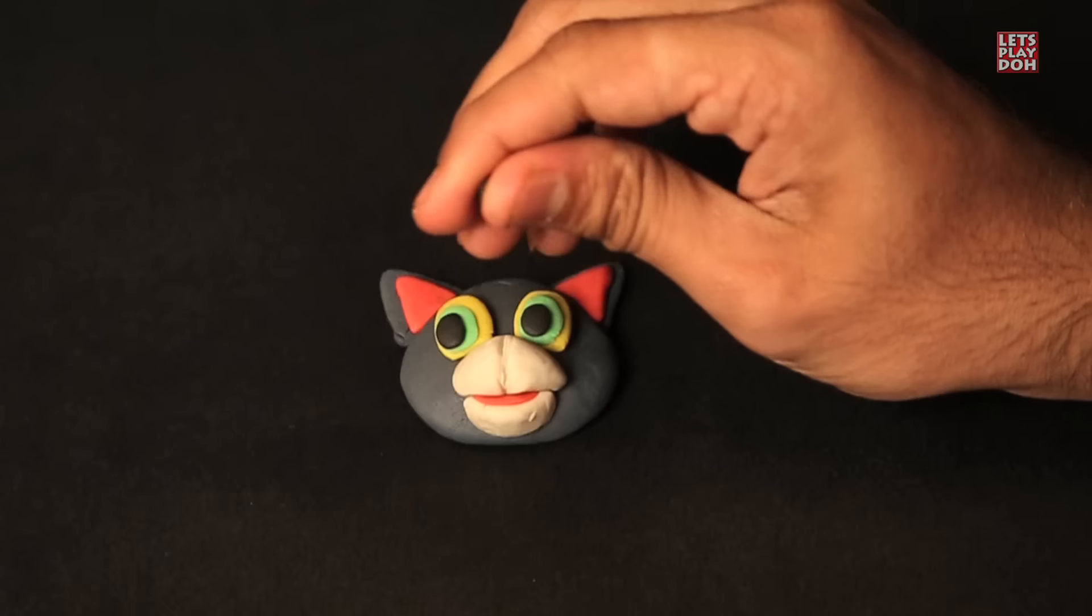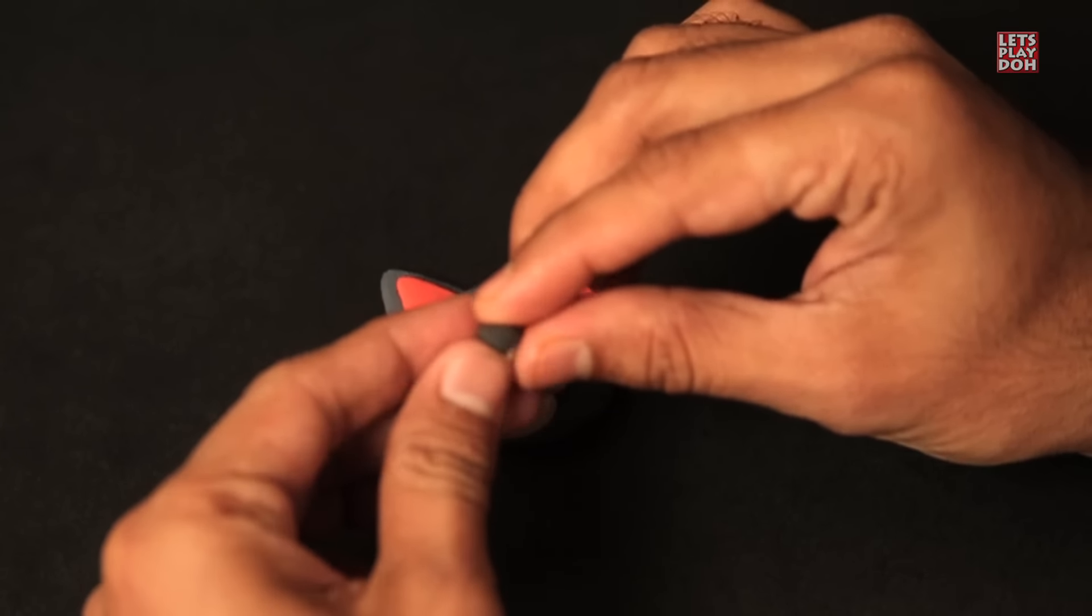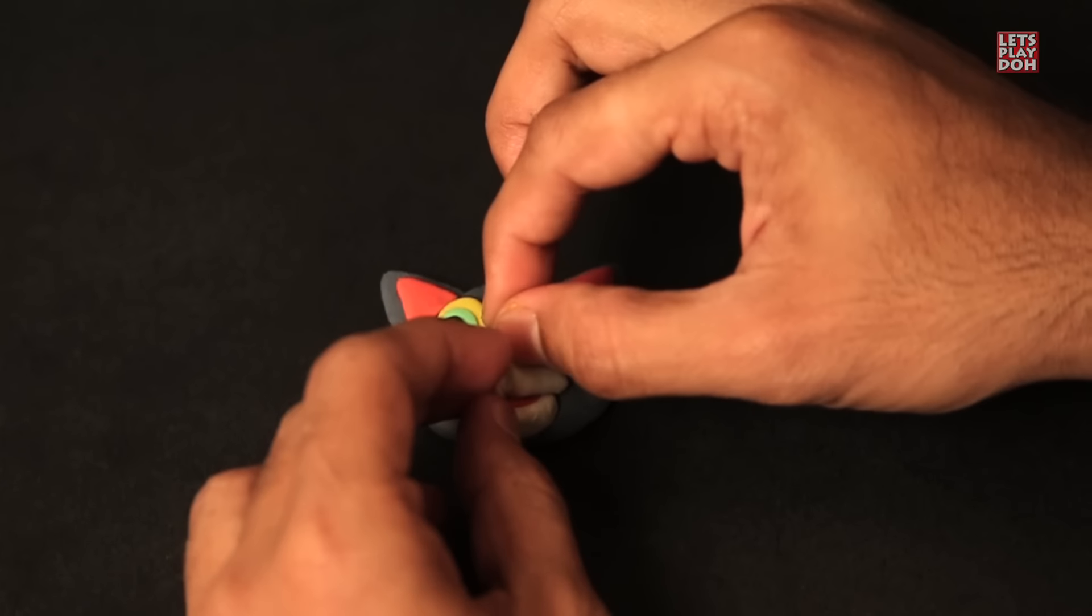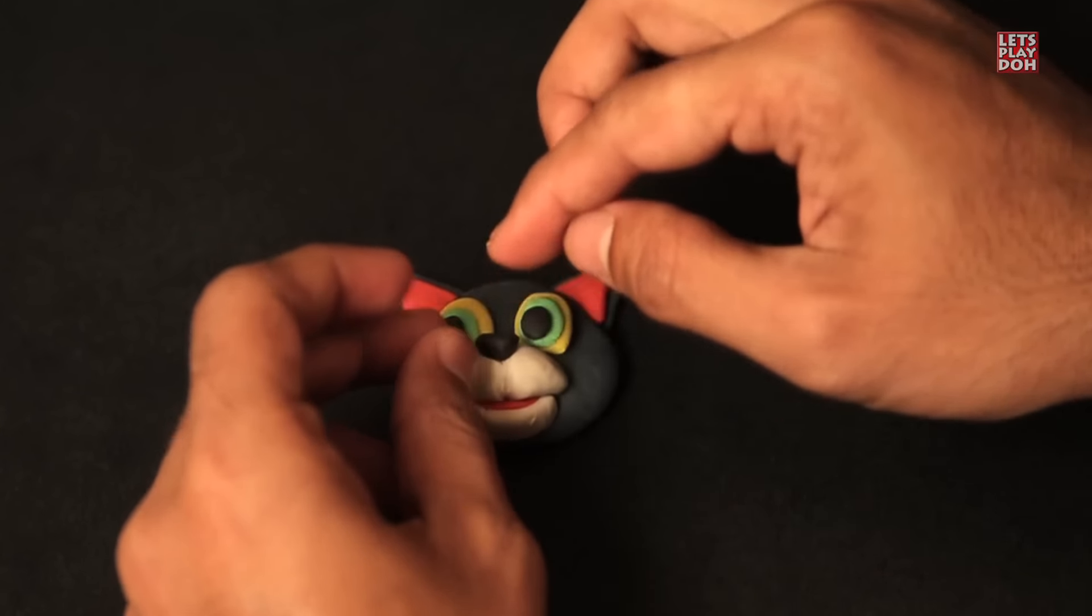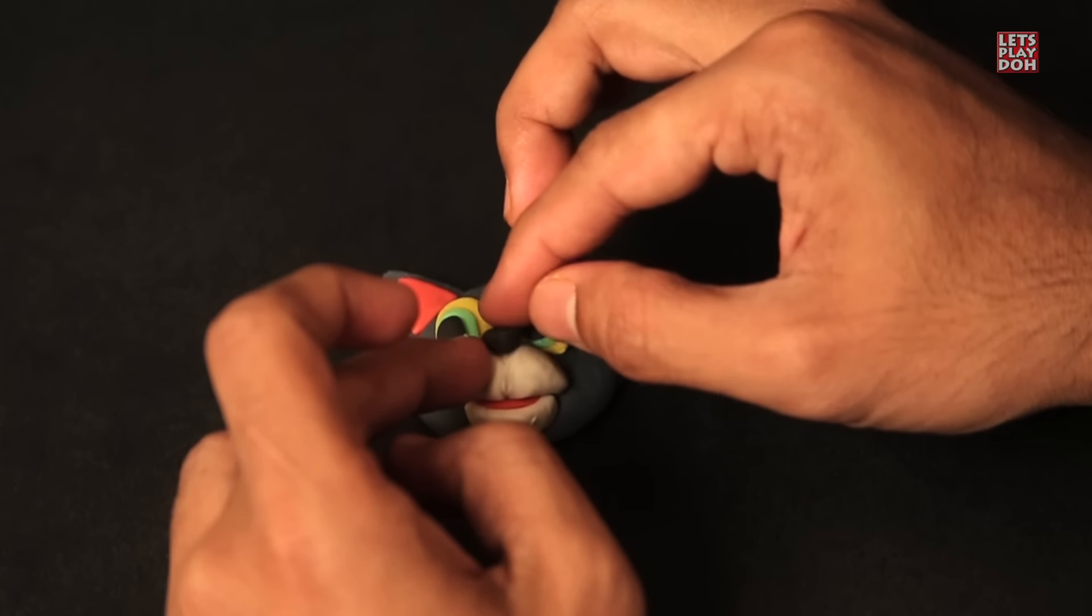Let's take some black Play-Doh. Just at the top of the triangle part of his upper mouth, you can create a little nose there. Just by putting it right there. That looks good. Good job.